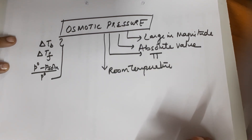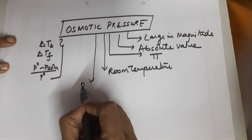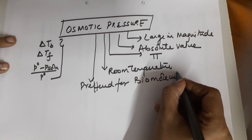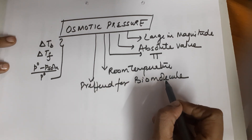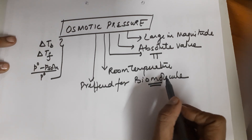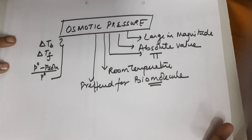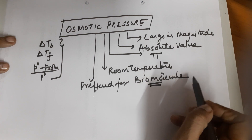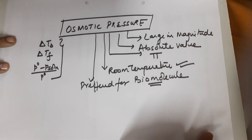Second advantage: osmotic pressure is measured at room temperature, which means fewer experimental hassles. This also makes it the preferred method for biomolecules such as proteins and enzymes, which are temperature sensitive. If you used boiling point elevation, the biomolecule might get denatured; at the freezing point it might become inactive. Since osmotic pressure is measured at room temperature, it is safe for biomolecules.